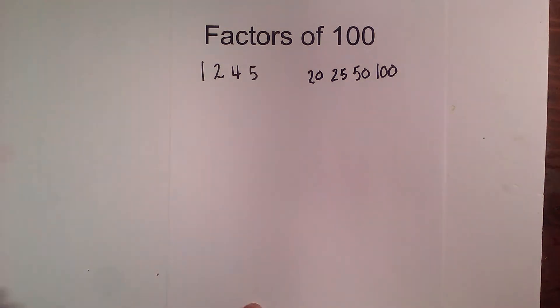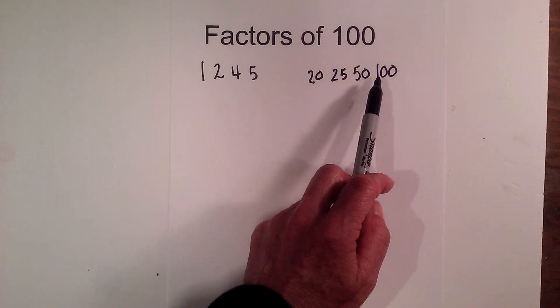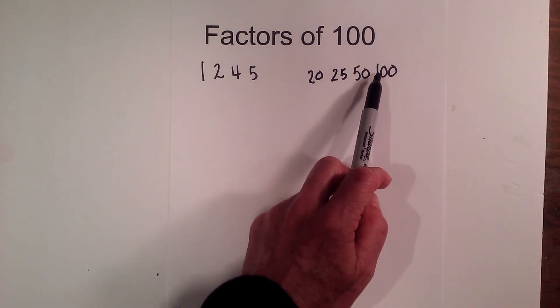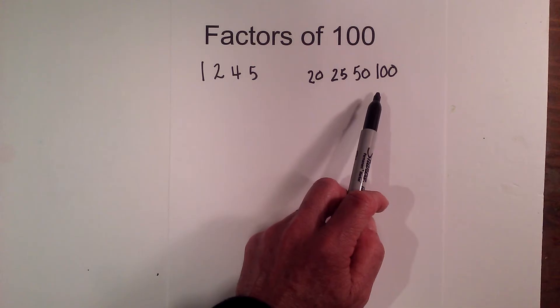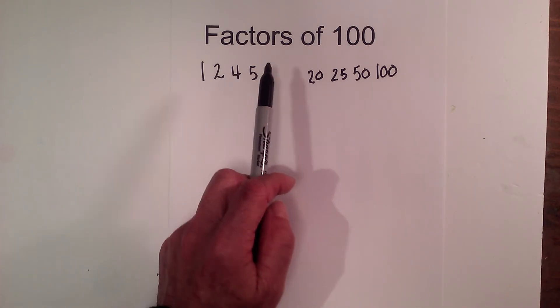7, I know that 7 does not go into it. 8, what you do for 8 is divide it 2 times by 2, so 100 divided by 2 is 50, and 50 divided by 2 is 25, and it must be an even number for it to be divisible by 8, so 8 is out.